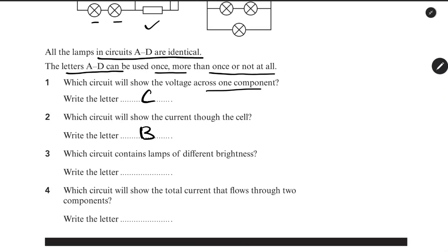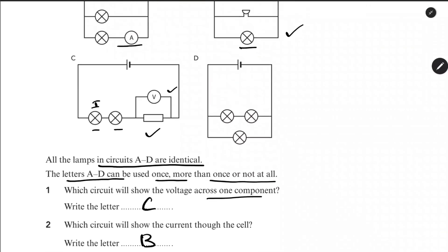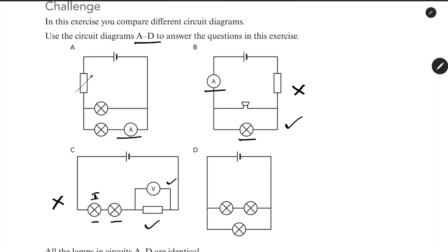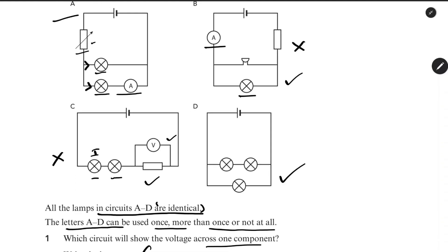Which circuit contains lamps of different brightness? In one of the circuits there are lamps with different brightness. In a series circuit the current is the same, so lamps would have the same brightness. In circuit D, one branch has one lamp and the other branch has two bulbs — the resistance differs, so electrons distribute differently between branches, resulting in different brightness. The answer is D.